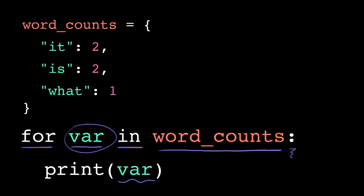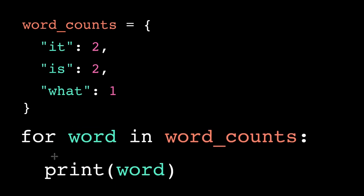But what do you think the loop variable holds on each iteration? When we iterate over a dictionary, the loop variable holds the next key. So we name our loop variable descriptively, based on what the keys in the dictionary represent.